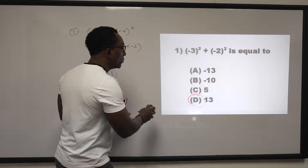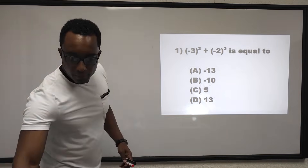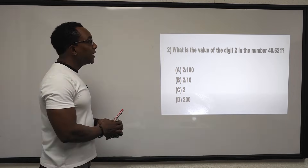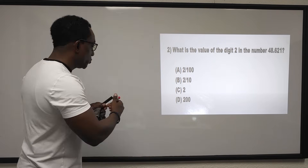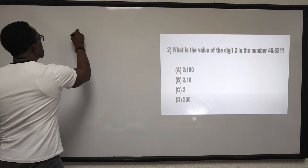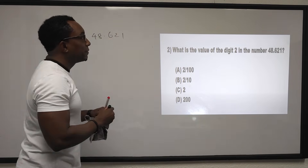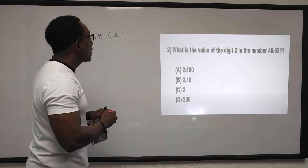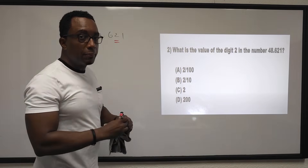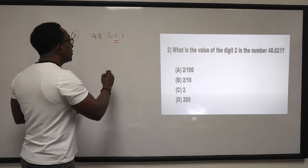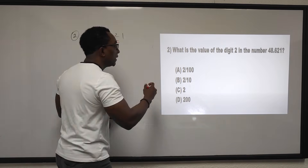Let's move on to question 2. Question 2 states: what is the value of the digit 2 in the number 48.621? Any digits after the decimal point — we're looking at tenths, hundredths — so 2 will represent hundredths, and we write it as 2 over 100. The answer is A.